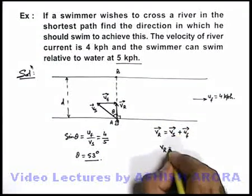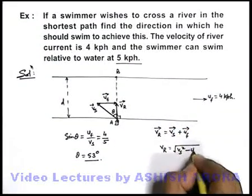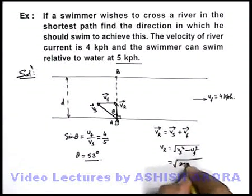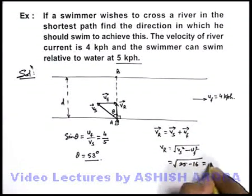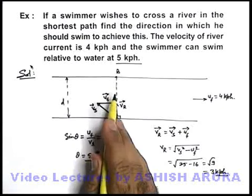with which he is actually crossing the river can be given as root of v_s square minus u_f square. So this will be root of 25 minus 16, that will be root 9. This is 3 kph. So actually he will be crossing the river at 3 kilometers per hour.